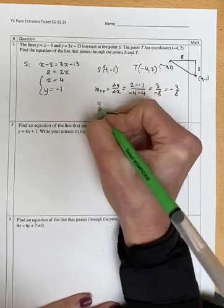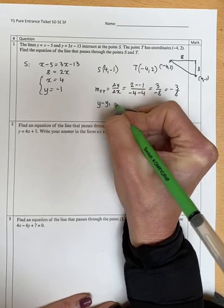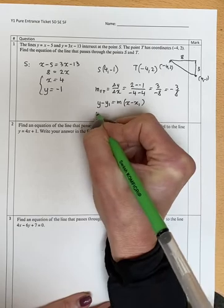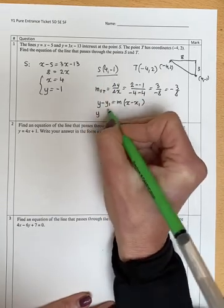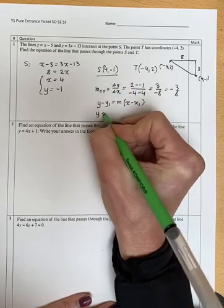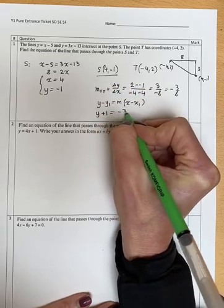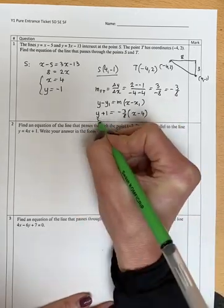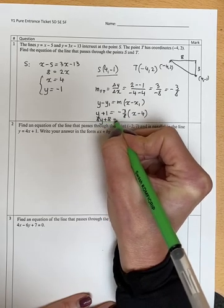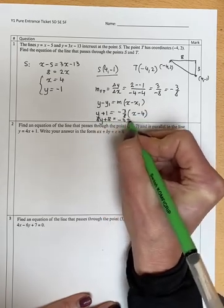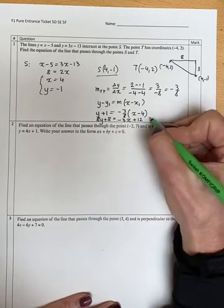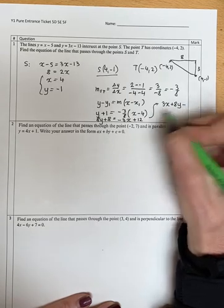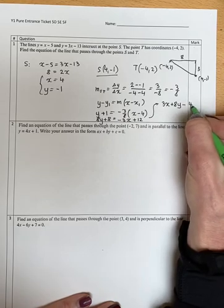So the equation of the line is going to be y minus the y coordinate, so y1 equals m times (x minus x1). Let's pick point S, so y minus minus 1 is y plus 1, m is minus 3/8, and then x minus the x coordinate. Rearrange it, you get 8y plus 8, and then times the bracket by minus 3, minus 3x plus 12. Finally rearranging it you will get 3x plus 8y minus 4, so it's 8 take away 12 so it's minus 4.